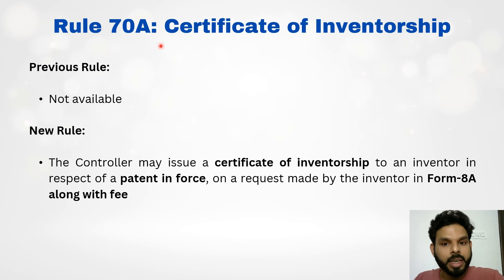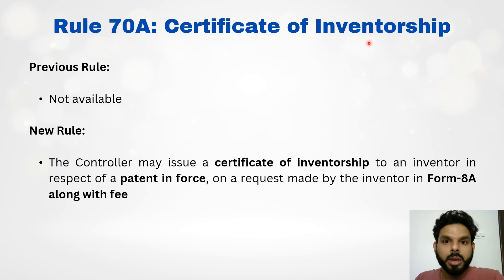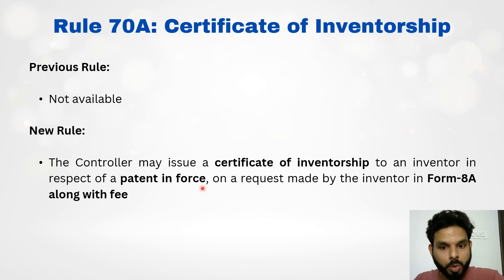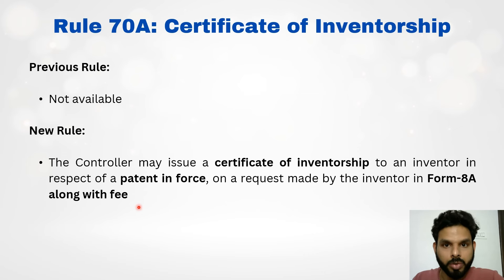The next amendment is made in Rule 70a, which is certificate of inventorship. This is again a new rule not available previously, but now incorporated into the patent rules. As per this new rule, the controller may issue a certificate of inventorship to an inventor in respect of a patent in force, on a request made by the inventor in Form 8a along with the prescribed fee.